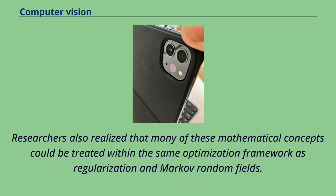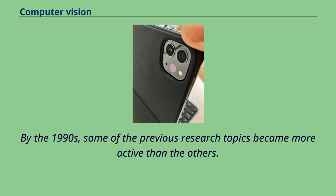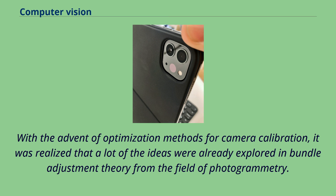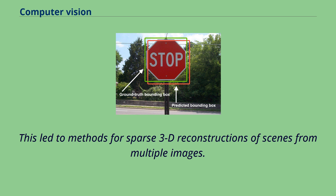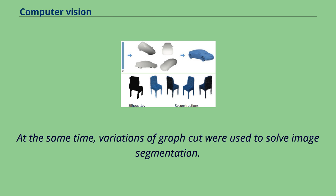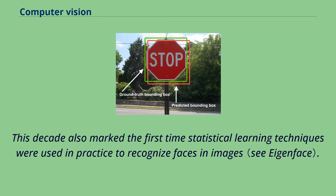By the 1990s, some of the previous research topics became more active than others. Research in projective 3D reconstructions led to better understanding of camera calibration. With the advent of optimization methods for camera calibration, it was realized that many ideas were already explored in bundle adjustment theory from photogrammetry. This led to methods for sparse 3D reconstructions of scenes from multiple images, progress on the dense stereo correspondence problem, multi-view stereo techniques, and graph cut methods for image segmentation. This decade also marked the first time statistical learning techniques were used in practice to recognize faces in images.